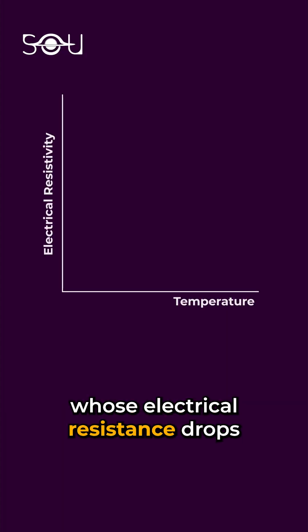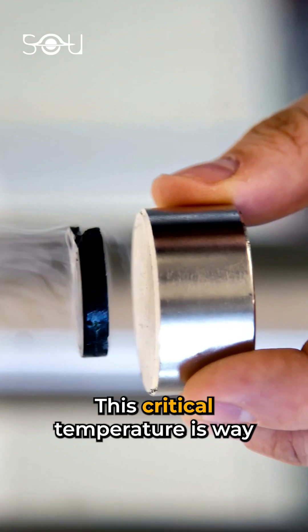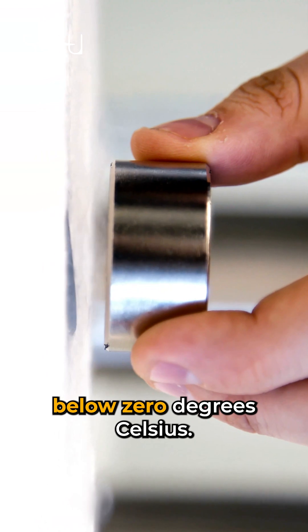Superconductors are materials whose electrical resistance drops to exactly zero below a critical temperature. This critical temperature is way below zero degrees Celsius.